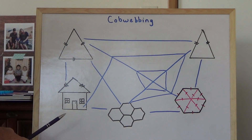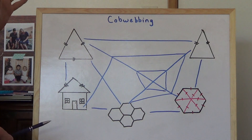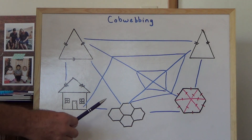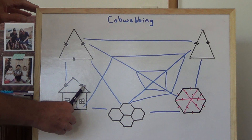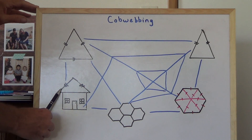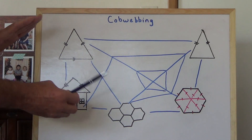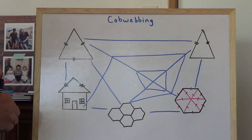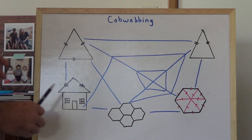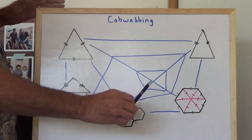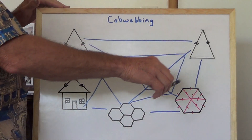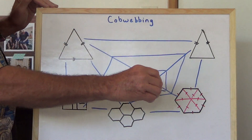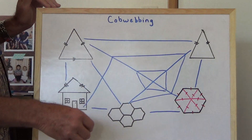And over here we have a house. This house has a roof. And the roof, when you look at the roofline, it looks like an isosceles triangle. So that is related to that. And we've got all these lines going around and it's like a cobweb.